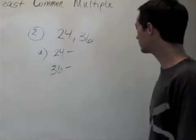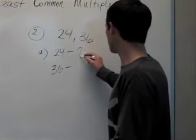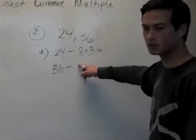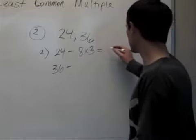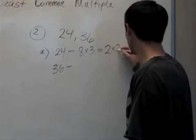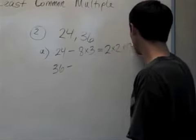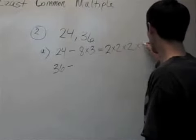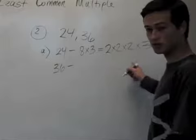So 24 is 8 times 3, but 8 is not a prime number. So we need to write 2 times 2, which is 4, times 2, which gives us 8, and then we need this 3. 2 and 3 are both prime numbers.